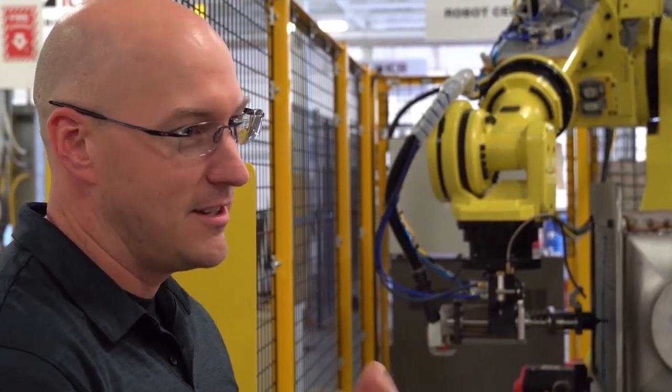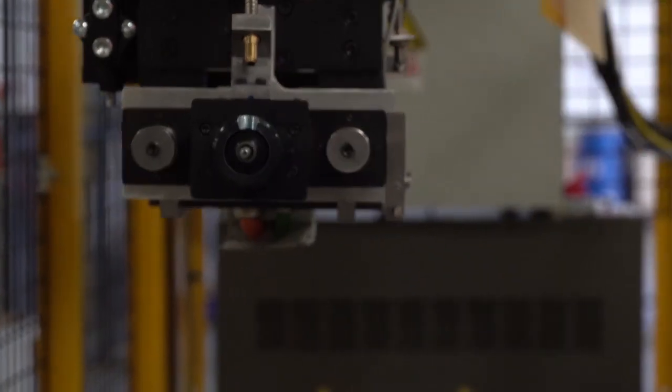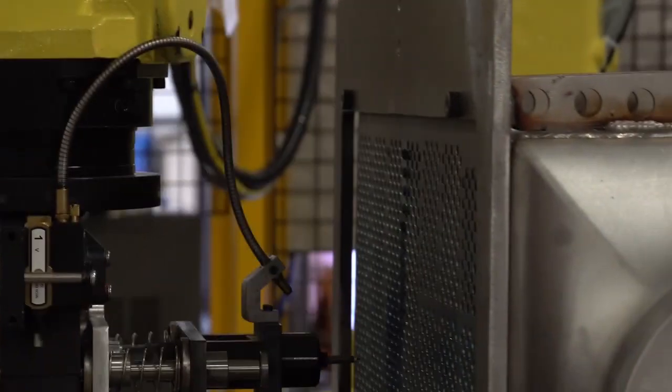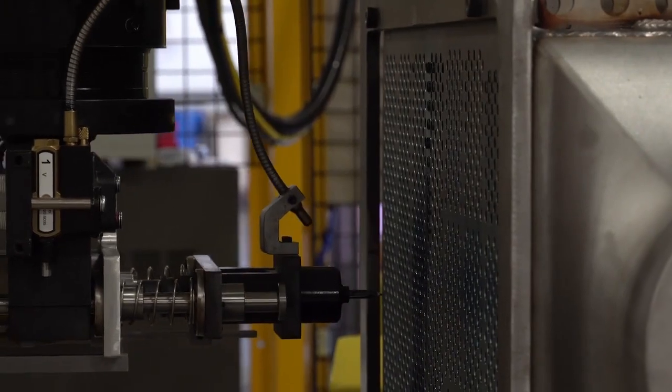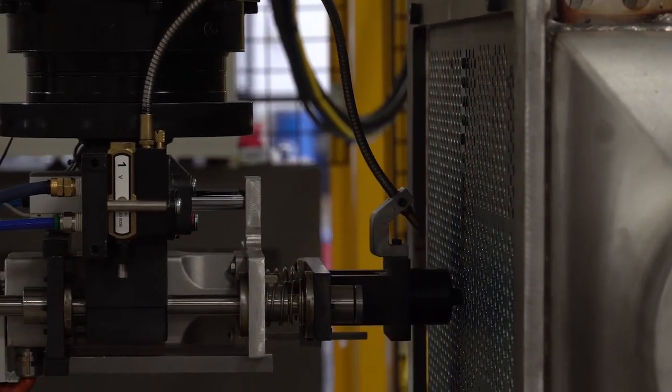This part has approximately 1,200 tubes in it. It's a heat exchanger. The tool goes in, and the tubes are in there loose initially, and expands the end of the tube to match the outer diameter of the hole in the plate so that the tubes don't fall out.